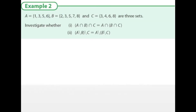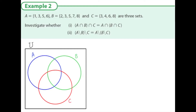Example two of three. Again we have three sets A, B, and C, represented with three circles labeled A, B, and C. We recognize that three is in common in all three sets. Five is in A and B. Six is in common in A and C, and eight is in common in B and C. This question doesn't really use the universe, but it's okay to have it there.